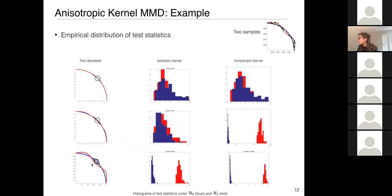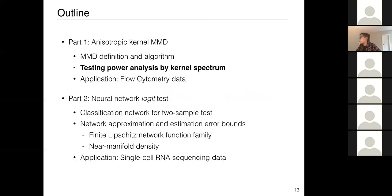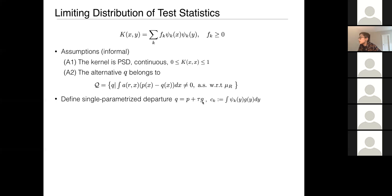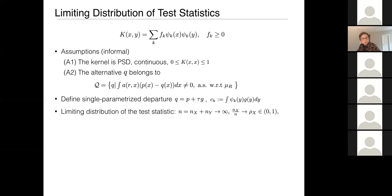As a toy example, histograms of the test statistic show: the null case where two densities are the same, and a slight departure where the anisotropic kernel sees the difference while the isotropic one does not. With larger departure, both methods detect the difference. For the power analysis, the squared statistic is related to the spectral decomposition. We consider assumptions that A2 is characteristic and Q is in the space the kernel can detect. We consider a family of departures: g is the difference of two densities, τ is a scalar with τ=0 meaning P=Q.